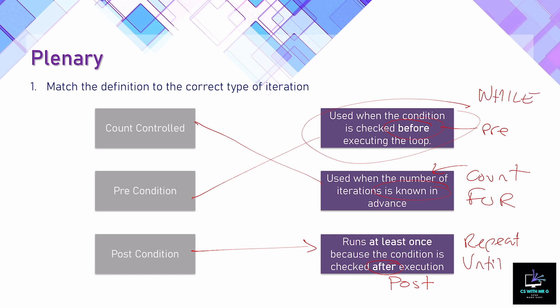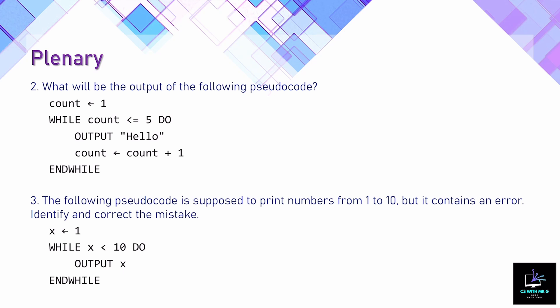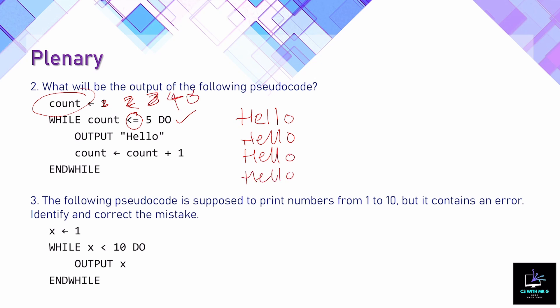Question two: what will be output by the following pseudocode? We set a variable count to one, and while count is less than or equal to five we output 'hello' and add one to count. Count starts at one — true — outputs hello. Count becomes two, still true, outputs hello. This continues through three, four, and five, which is still true because it's less than or equal to five. Once count reaches six, the condition is false and the loop stops. Hello is output five times.